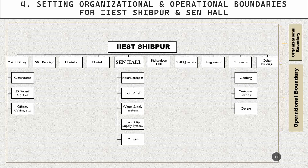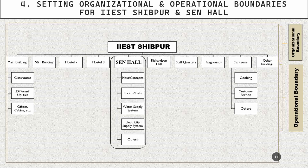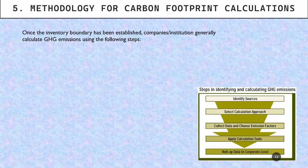Similarly, in the case of this hostel, IST Sivpur has many buildings. The organizational boundary will be IST Sivpur as a whole and all its buildings. Talking about the operational boundary, we are mainly focused on Sen Hall. Sen Hall has other things like mess rooms, water supply system, and electricity supply systems — all these come under the operational boundary.